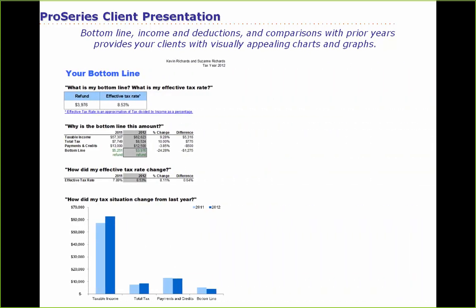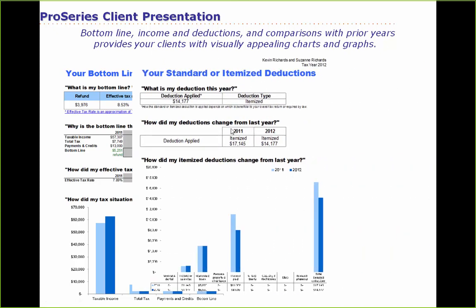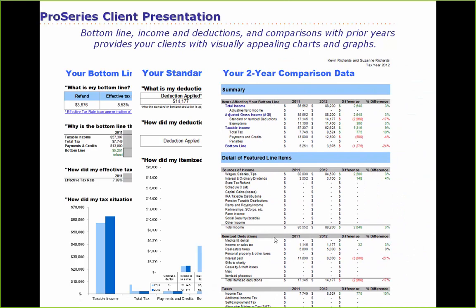The second report, called Client Presentation, gives your client a comparison of last year's return to this year's return — dressed up so it looks really good included in the return. The first page shows your bottom line: effective tax rate, refund of $3,976, effective rate of 8.53%, and high-level taxable income, tax, payments, credits, and bottom line with bar graphs showing how the tax situation changed. The second page compares standard or itemized deductions year over year, and the third is a detailed two-year comparison with prior year, current year, dollar difference, and percentage difference columns.